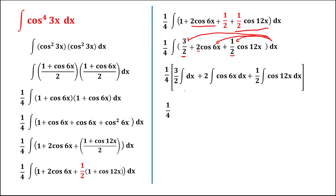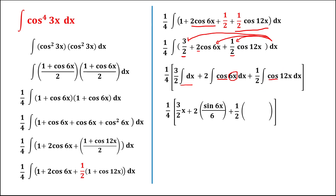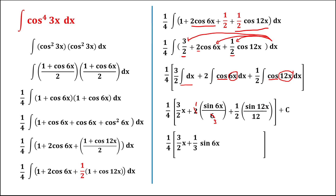Evaluating each integral: the integral of dx is x, so the first term gives 3 over 2 times x. The integral of cosine 6x is sine 6x over 6, so 2 times that simplifies by reducing 2 over 6 to 1 over 3, giving plus 1 over 3 sine 6x. The integral of cosine 12x is sine 12x over 12, so one half times that gives plus 1 over 24 sine 12x, plus C.